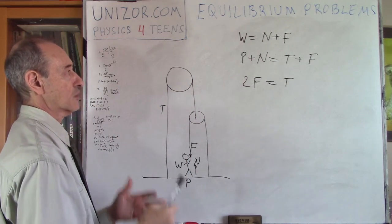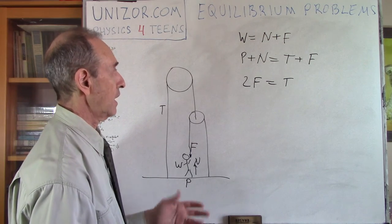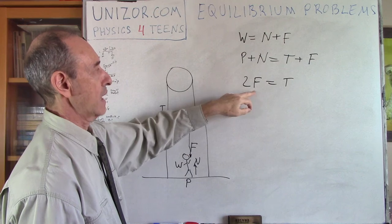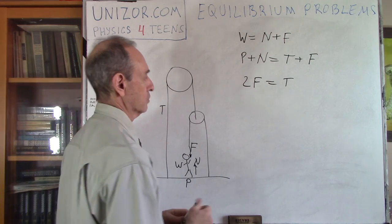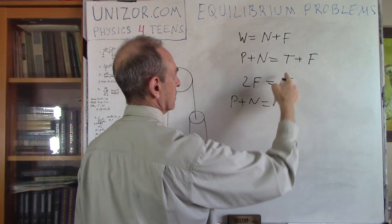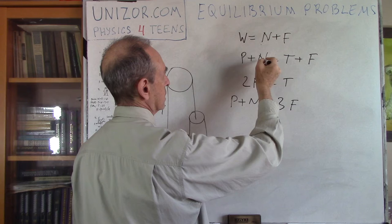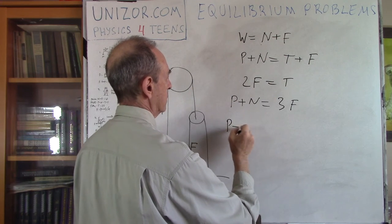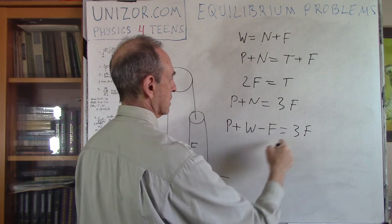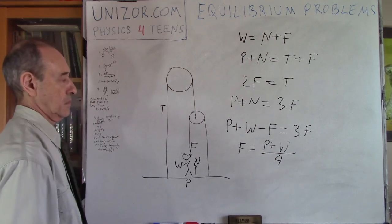These are the three conditions to balance the platform, the person, and the pulley. W and P are given; we need to find force F. Substituting T = 2F into the platform equation: P plus N equals 2F plus F, giving P plus N equals 3F. From the person equation, N equals W minus F. So P plus (W minus F) equals 3F, which gives P plus W equals 4F. Therefore F equals (P plus W) divided by 4.